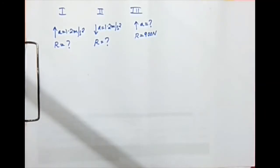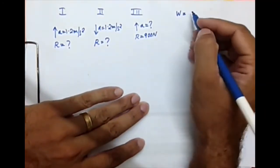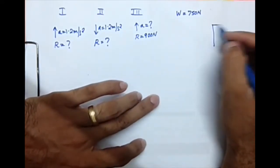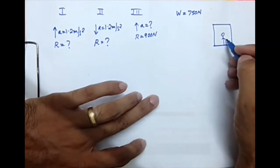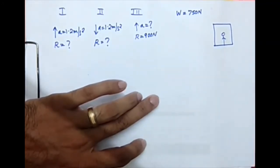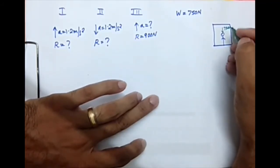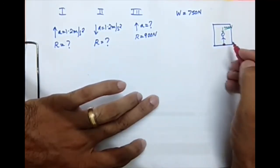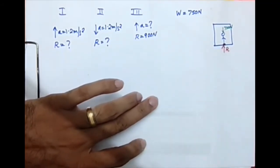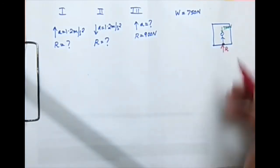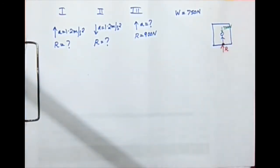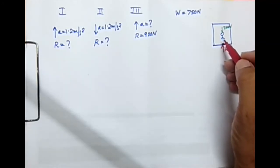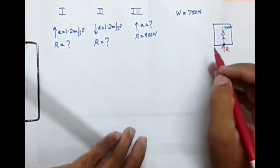The weight of the man is given as 750 N. There is a lift compartment, a person is standing on it, and his weight of 750 N acts downward. At the point where he contacts the floor, the floor exerts a reaction R. That reaction depends on his weight and the dynamic condition — that is, force equals mass times acceleration.